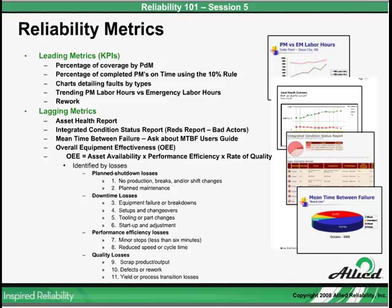Next, a chart detailing faults by times — what are you having the most faults with, the most failures in your equipment? Put them on a chart and post them on the board so you can look at them, because once your maintenance people see why you're having the most failures, it's typically a common thread. So if you have fault codes, cause codes, and action codes on your work orders, they should be used 100% of the time — not 50% of the time or once in a while, but 100% of the time.